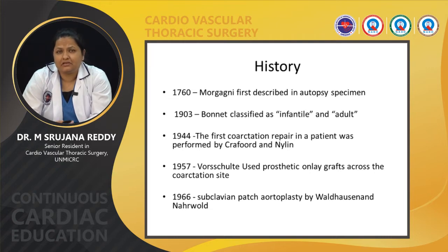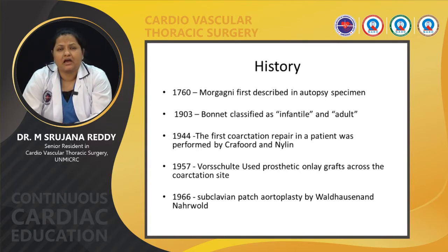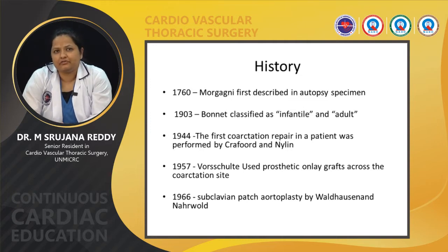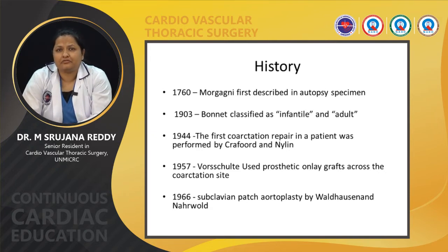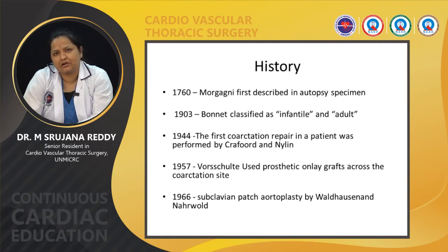In 1903, Bonnet classified coarctation into infantile and adult groups, otherwise termed as pre-ductal and post-ductal coarctation of aorta. In 1944, the first repair was performed in a patient with coarctation by Crawford and Nylon. In 1957, Wachuld used prosthetic onlay grafts across the coarctation site. And in 1966, the first subclavian patch aortoplasty was done by Waldhausen and Narwald.